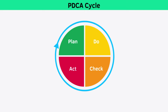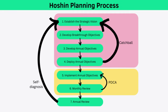Let's jump in and look at the Hoshin Planning process. The first step is to establish your organization's strategic vision — it describes where your organization hopes to get to in the future; essentially, it's the strategic aim of your organization. Next, you develop your breakthrough objectives: ones that the organization will have to stretch itself to achieve within the next three to five years.